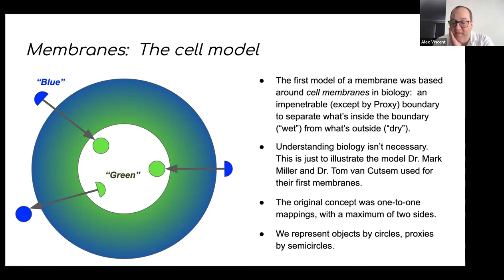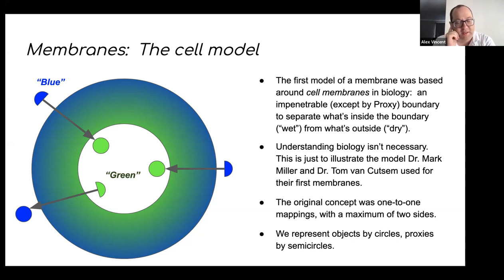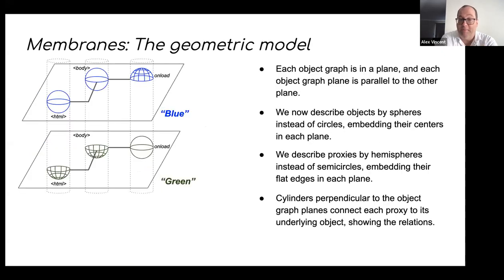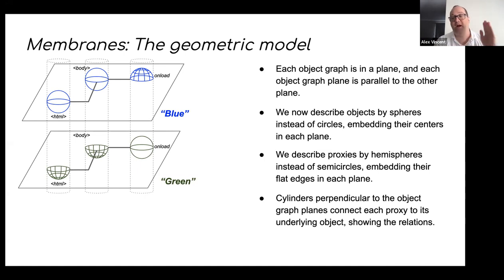When I was presenting in July 2018 at the TC39 plenary in Redmond, Washington, a question came up asking if biology was required to understand this. I responded that you don't need that, but we're going to get to a three-dimensional model. Two months later I came up with a geometric model: instead of inside or outside a cell membrane, I'm using object graphs as two-dimensional planes, parallel to each other. Now we have spheres for objects, hemispheres for proxies, and cylinders to illustrate connections between them.